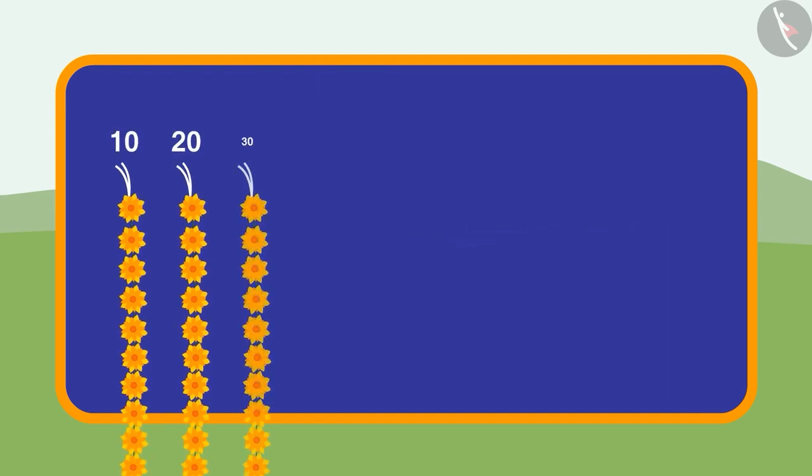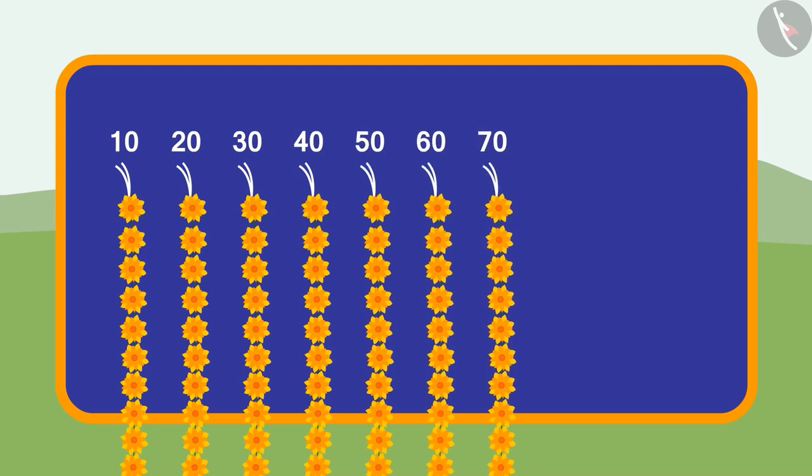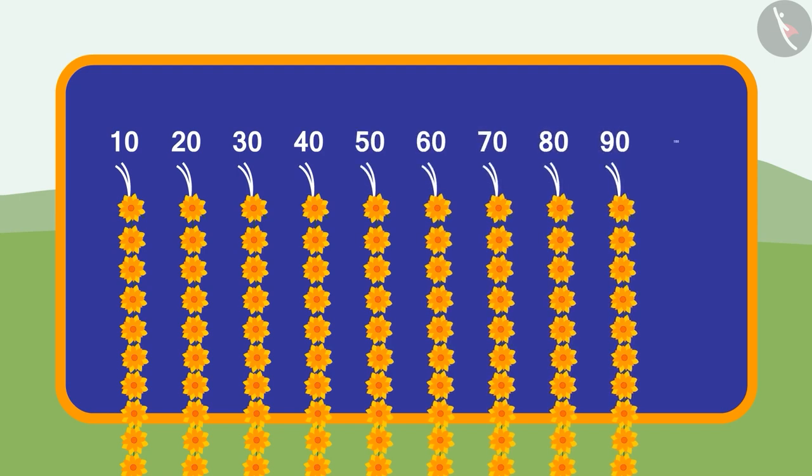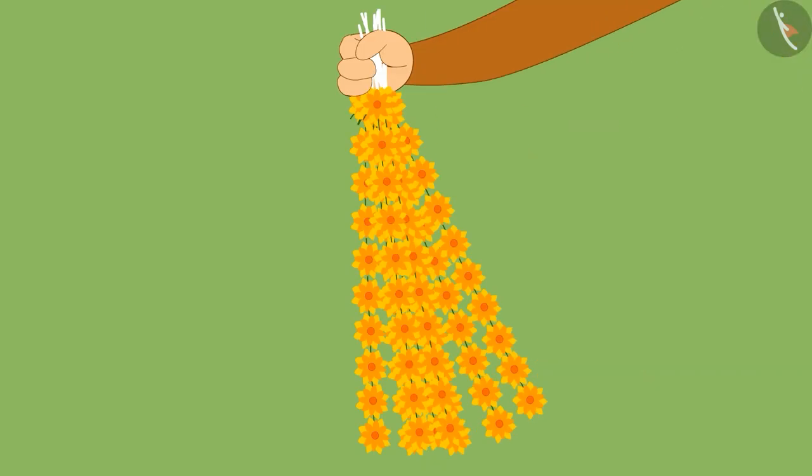10, 20, 30, 40, 50, 60, 70, 80, 90 and 100. Just like this, Babloo could quickly count the flowers and give it to Gaffee.